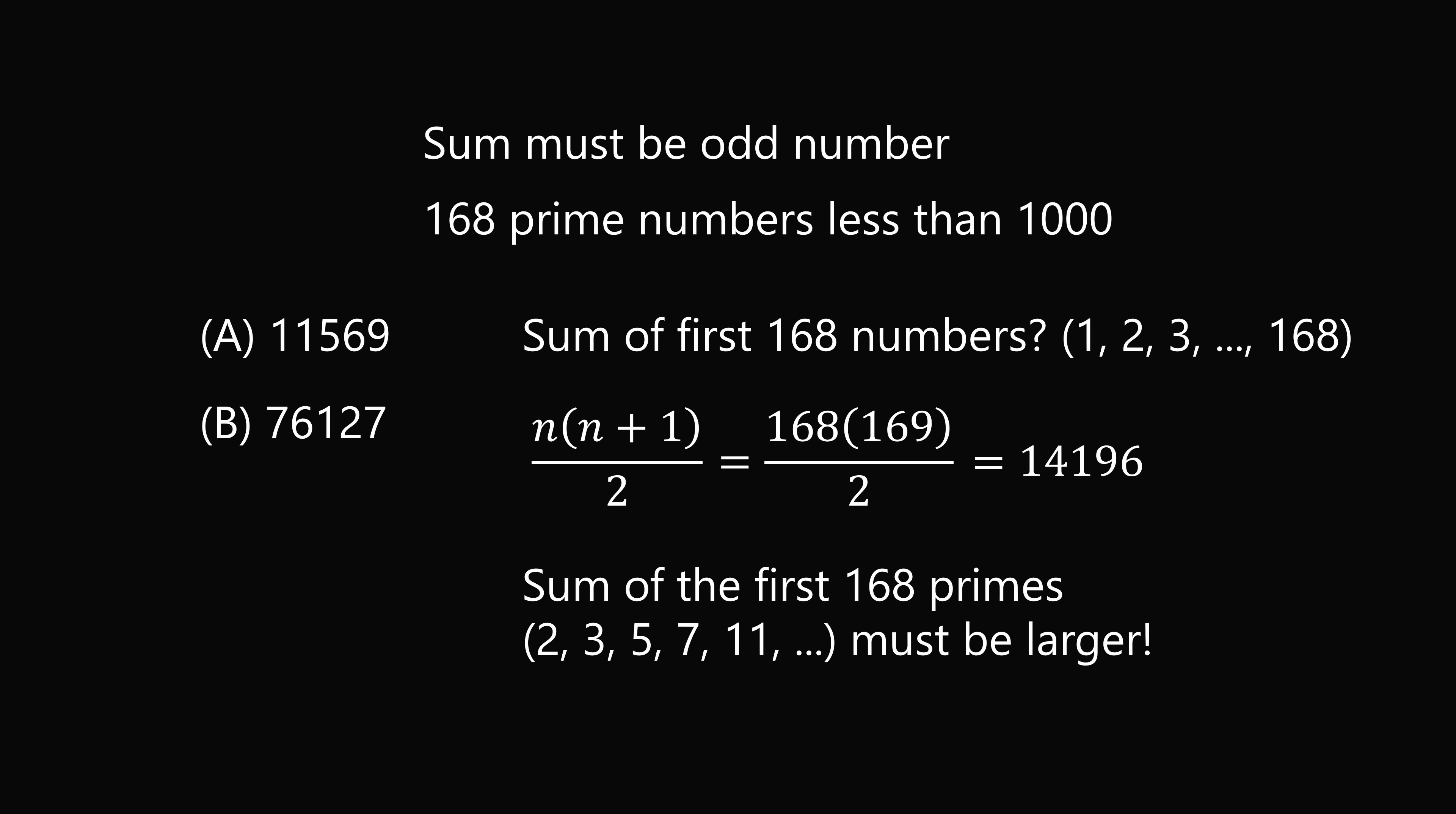So the sum of the first 168 primes must be larger than the sum of the numbers from 1 to 168. So we know the answer can't be A because 11,569 is less than 14,196.